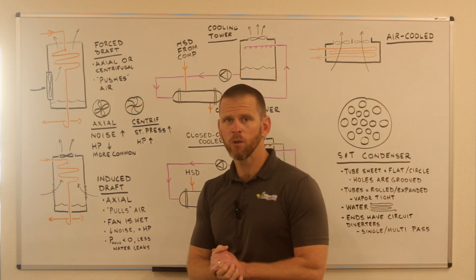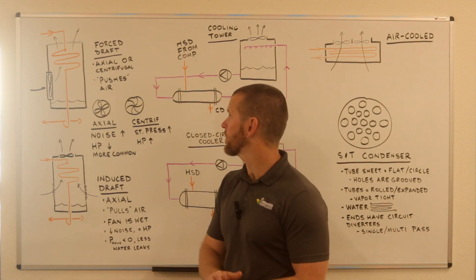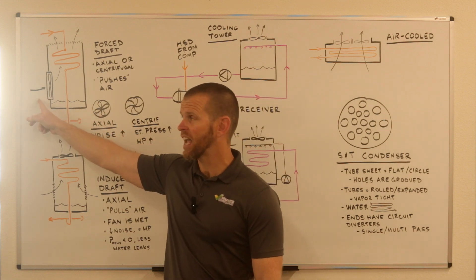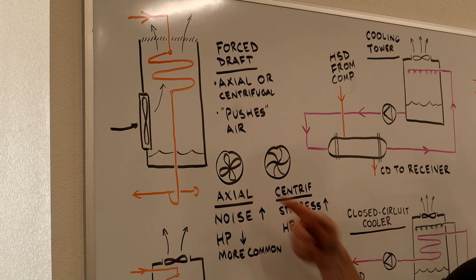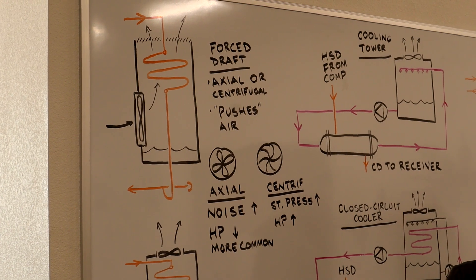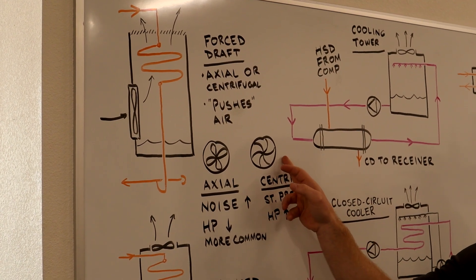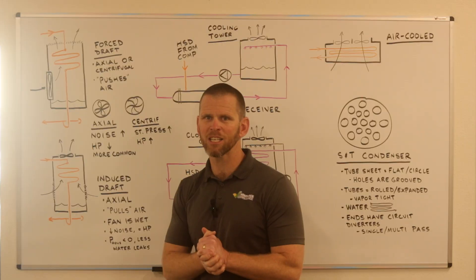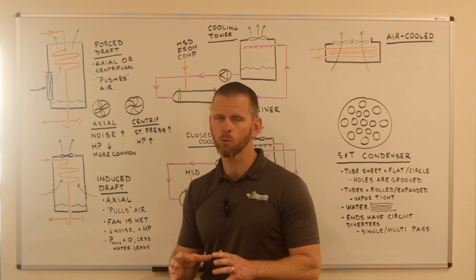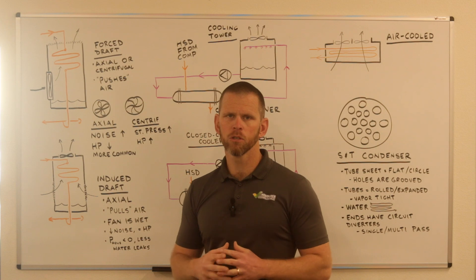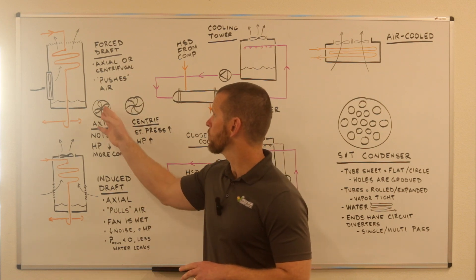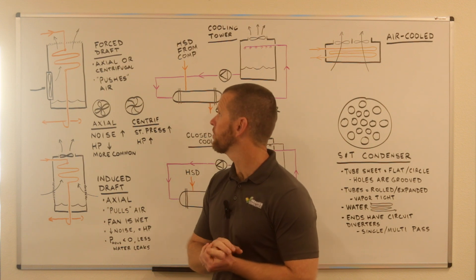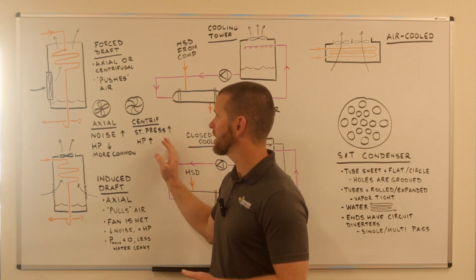There are some noteworthy differences between the two types. In a forced draft, you'll most often see axial fans — a propeller-type fan, like a ceiling fan — but you may also see a centrifugal fan, sometimes called a squirrel cage fan. Centrifugal fans are not used too much anymore on forced draft condensers, but on older units you will still see them. There are pros and cons between these two types of fans.